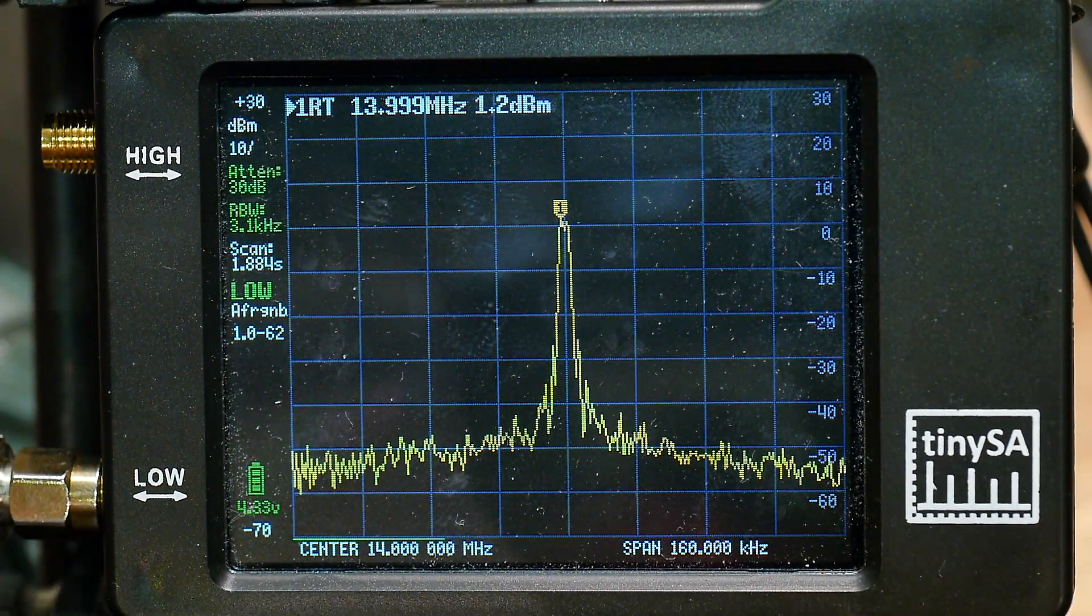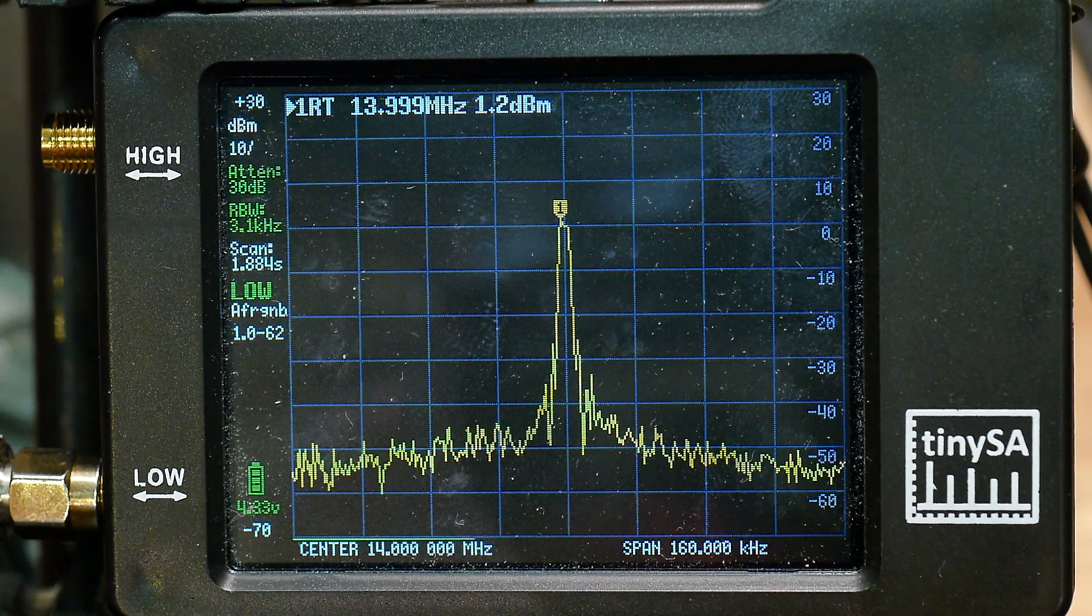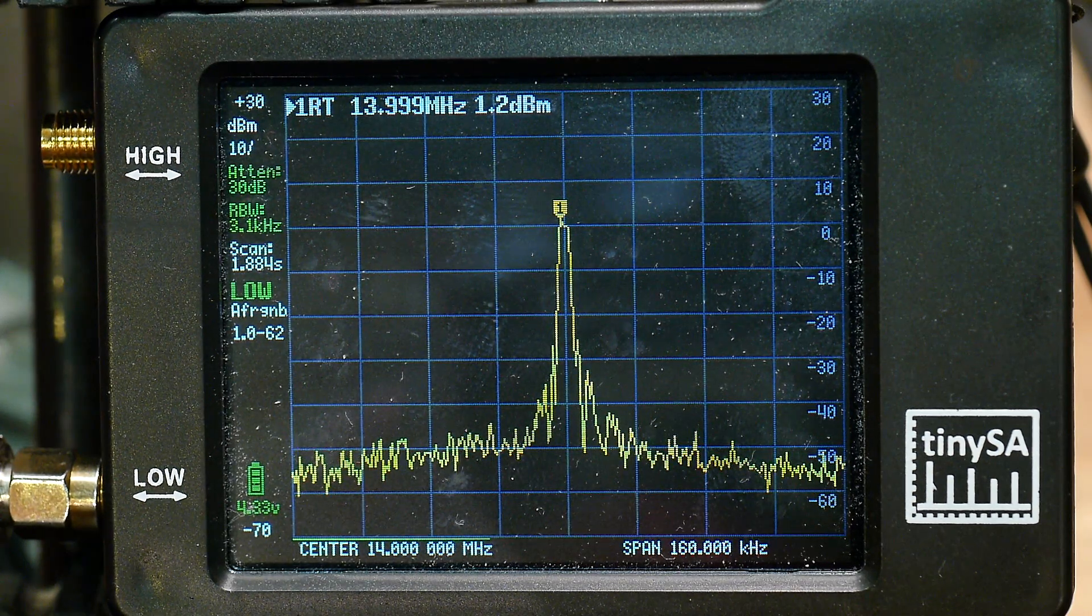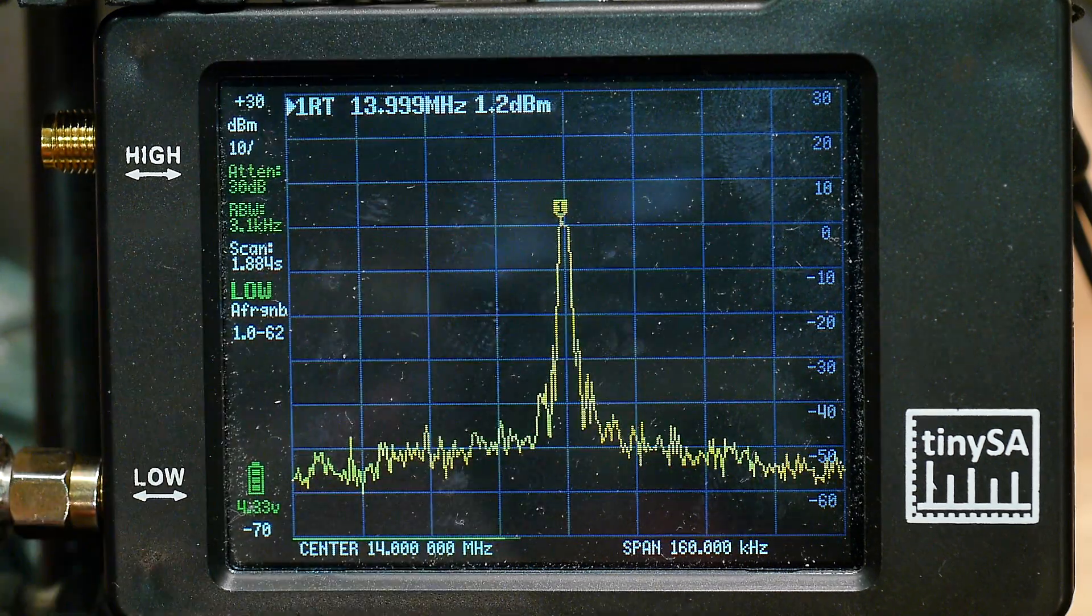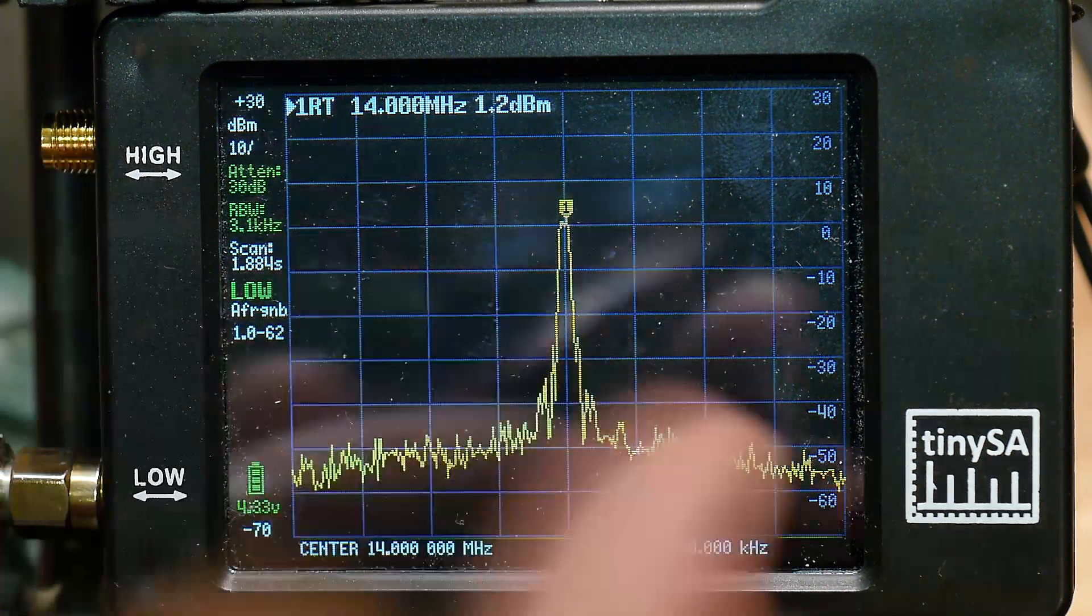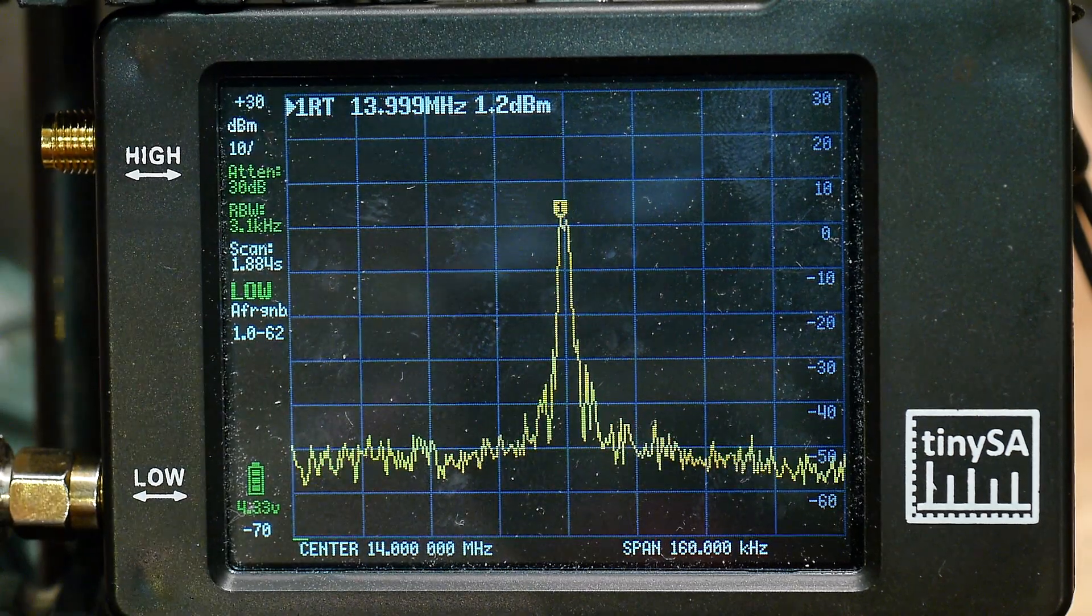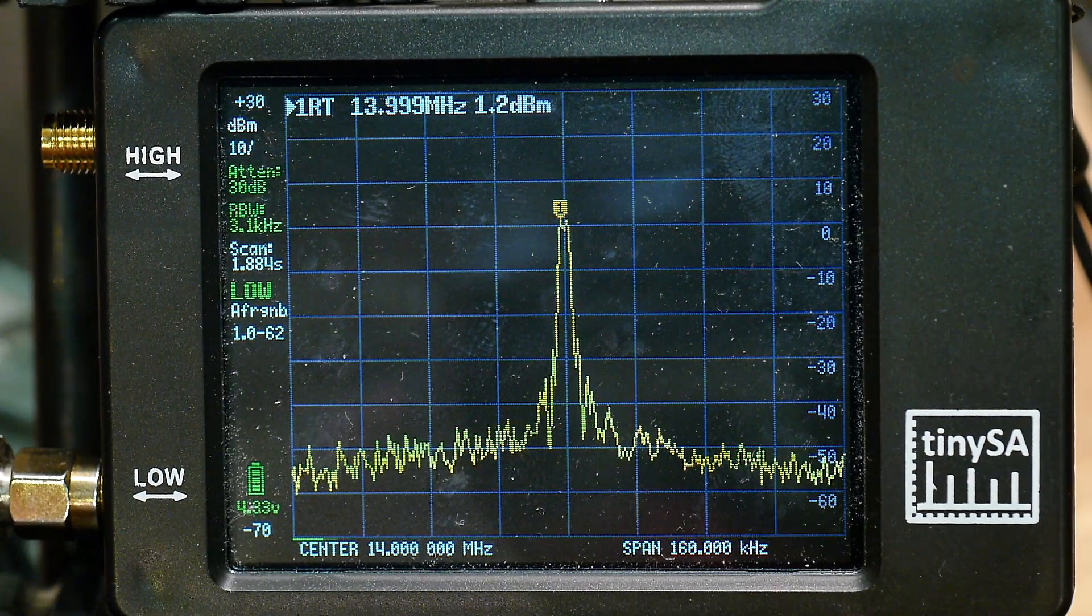We know we have a 0 dBm signal so we're going to attenuate it below minus 30. You always want to be looking at signals below minus 30 dBm. So either use an external attenuator to drop it down or use the internal one. Now the internal one only goes to 30 so we've maxed out here. But we have a better looking display now.